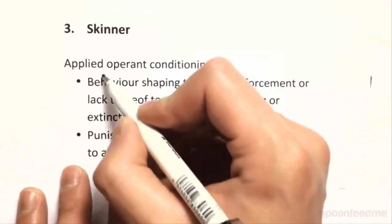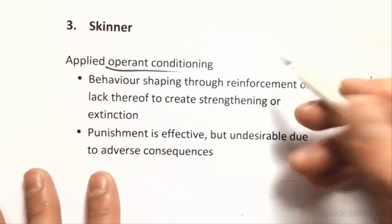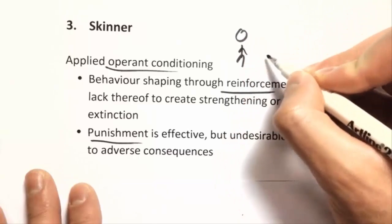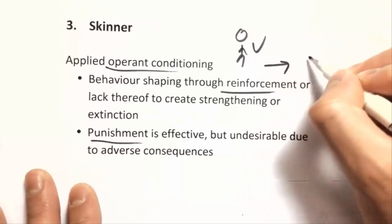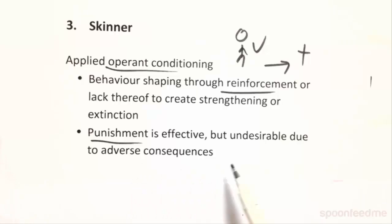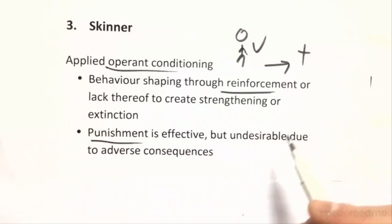Skinner took it a little differently with operant conditioning. Classical conditioning is what Watson used; operant conditioning is all about reinforcements and punishment. If someone does something that you reward, they'll do it more and more, and the opposite with punishment. However, punishment is considered undesirable in development — it's not very good — and really it's all about the different types of reinforcements, which we'll look at later.